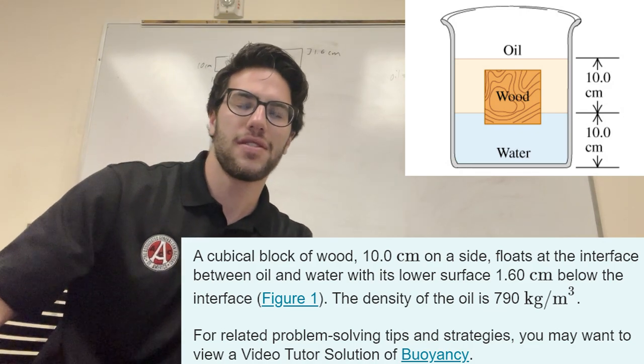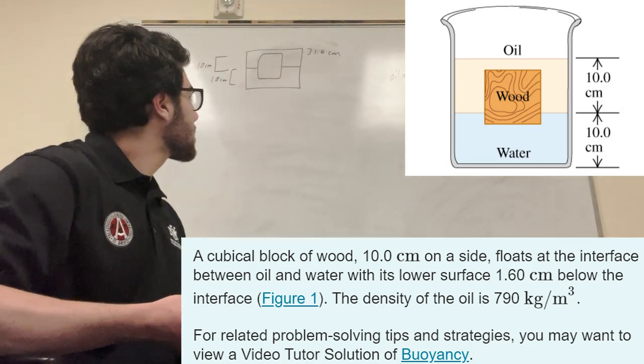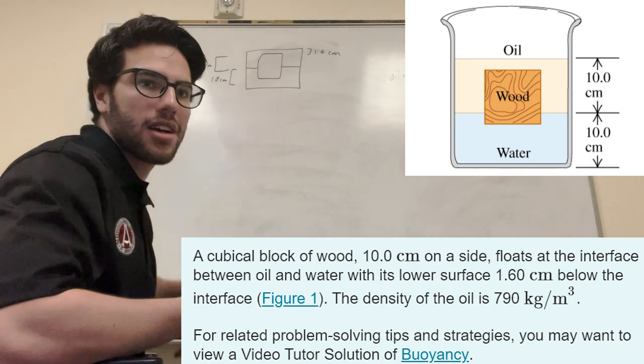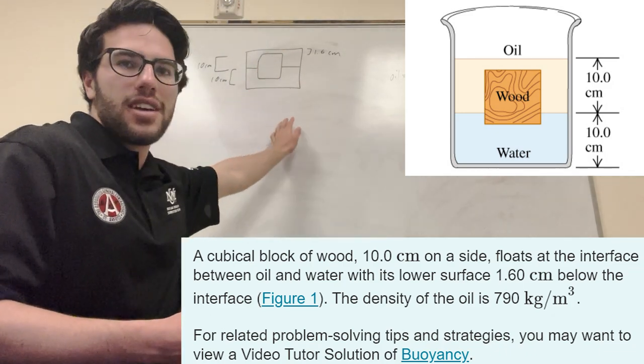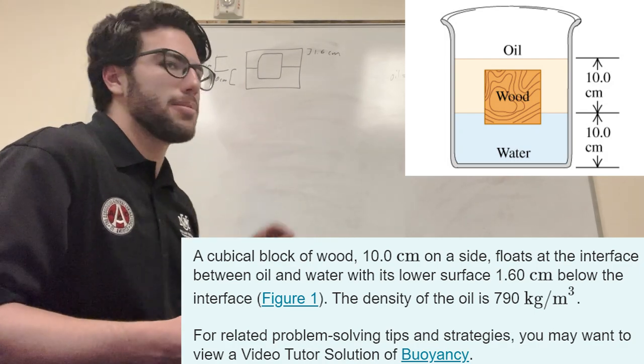What's up Cal gang? All right, we got this fluid problem here. So it wants us to calculate the pressure of this block in this vat. It's oil on the top, it's water on the bottom, and then it has these dimensions.